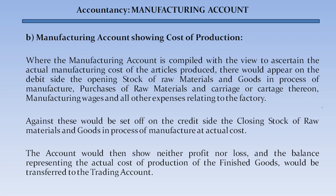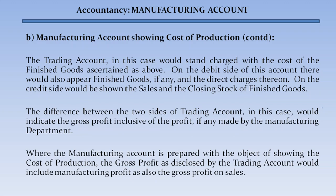In a manufacturing account showing cost of production, where the account is compiled to ascertain the actual manufacturing cost of articles produced, there would appear on the debit side: the opening stock of raw materials and goods in process of manufacture, purchases of raw materials and carriage thereon, manufacturing wages, and all other expenses relating to the factory. Against these would be set off on the credit side the closing stock of raw material and goods in process of manufacture at actual cost. The account would then show neither profit nor loss, and the balance representing the actual cost of production of finished goods would be transferred to the trading account.